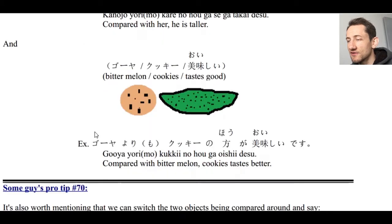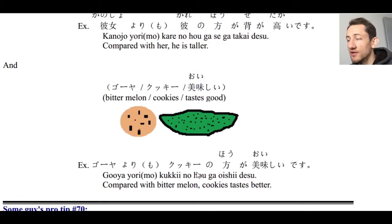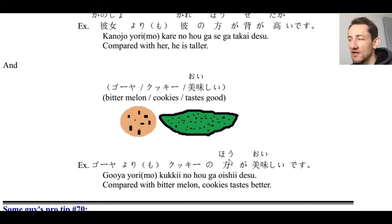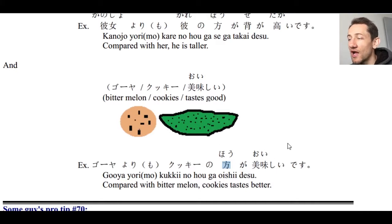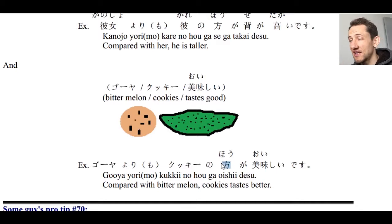The second sentence would look like this: goya yori mo kukki no hou ga oishii desu. Compared with bitter melon, kukki no hou ga oishii desu. Kukki no hou is like pointing to the cookies — this character hou means direction, like 'this side, not that side.' Compared to bitter melon, cookies taste better. A more natural English translation would be: cookies taste better than bitter melon, or better than goya.